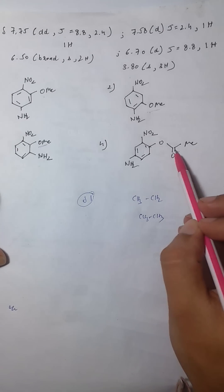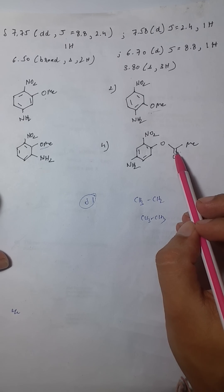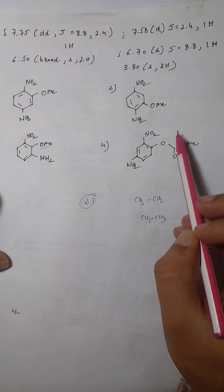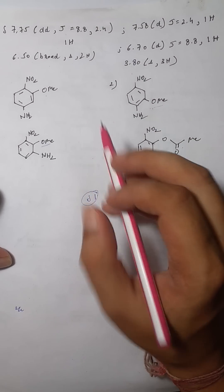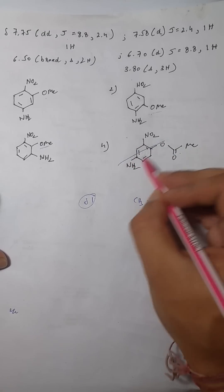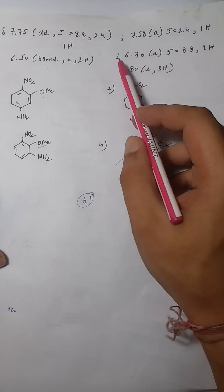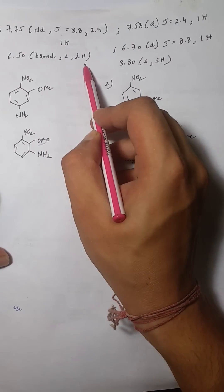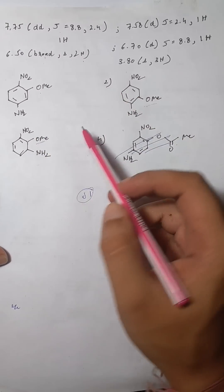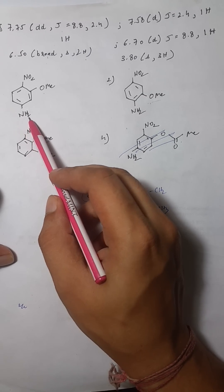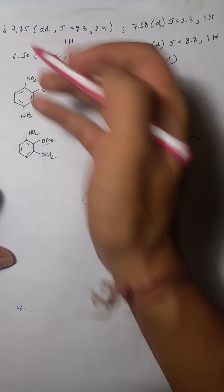One option has the methyl attached to a carbon-carbon bond, which is slightly electronegative but not enough to cause deshielding to delta 3.8, so you can partially eliminate it. Next, 6.5 broad singlet two hydrogens — 'broad' means it's an acidic proton, and two hydrogens on nitrogen means NH2. These are the acidic protons, so that is justified.